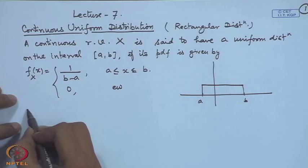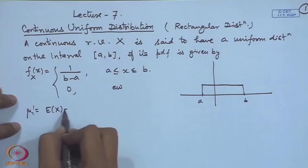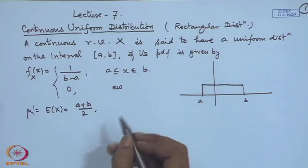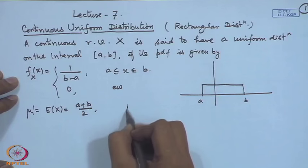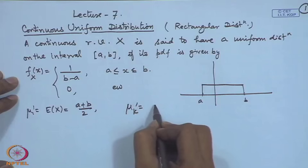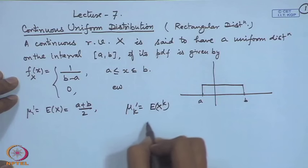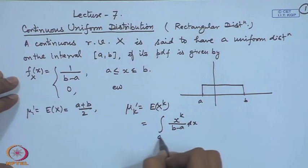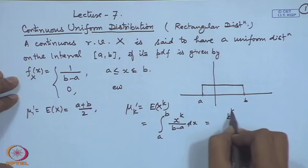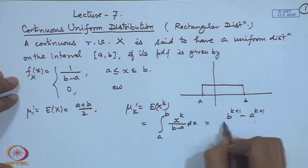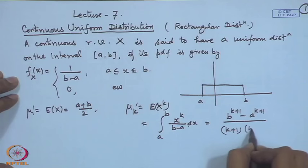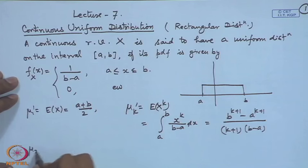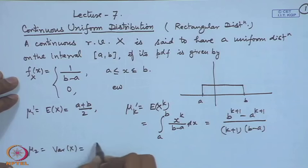Since the density is constant, the mean or the first moment will simply be the midpoint of the interval. Moments of any order can be easily calculated: μ'_k = E[X^k] = integral of x^k/(b−a) dx from a to b, which equals (b^(k+1) − a^(k+1)) / ((k+1)(b−a)). In particular, the variance turns out to be (b−a)² / 12.